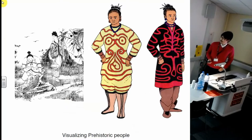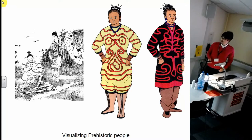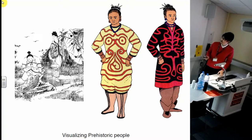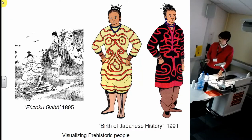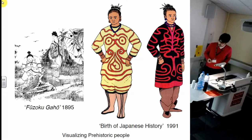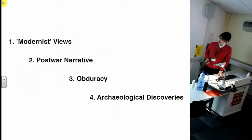Look at these images. This is a visualization of prehistoric people in Japan. Both of them are similar to each other, particularly in hairstyle and outfit. But the left one was created in the late 19th century, and the right one was created in the late 20th century. During one century, diverse images were created. So through the examination of this topic, I will talk about theorizing or visualization.